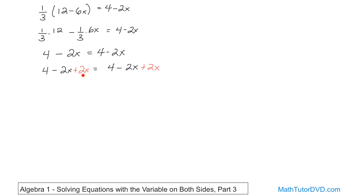You see on the left hand side, I have negative 2x plus 2x, so this gives me 0. And on the right, I have also negative 2x plus 2x, so I have 0.